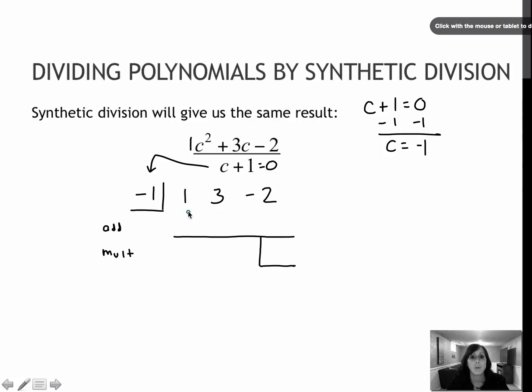I take my 1 and drop it straight down. I do that every time. Now it's below the line. So I'm going to take negative 1 times 1. So this is the multiply line. Negative 1 times 1 is negative 1. I'm going to add those values. 3 plus negative 1 is 2. I'm going to multiply that 2 times negative 1 to get negative 2. And then I'm going to add negative 2 to negative 2 to get negative 4.